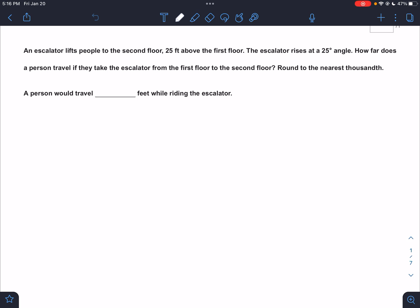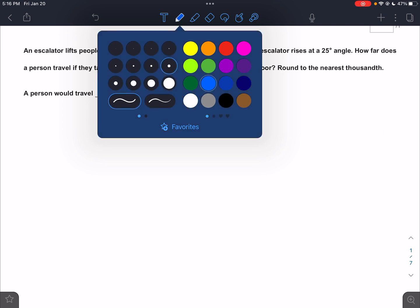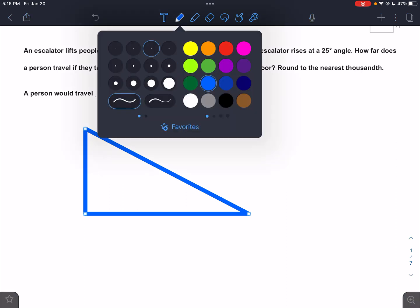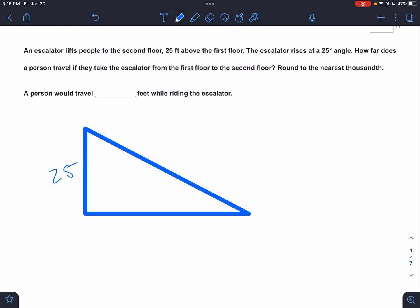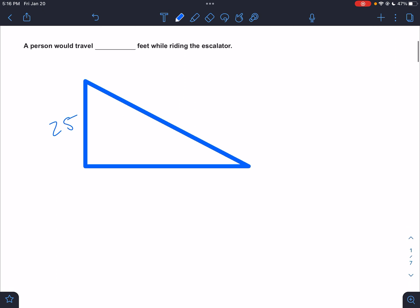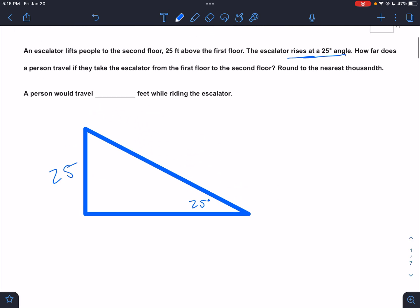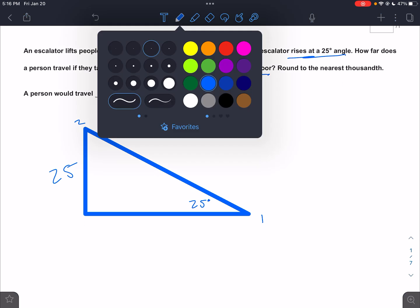It says an escalator lifts people to the second floor 25 feet above the first floor. So understanding what that looks like, above is going to be a vertical number, 25 feet above the first floor, vertical. The escalator rises at a 25 degree angle. That's an angle of elevation. How far does a person travel if they take the escalator from the first floor to the second floor?